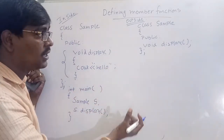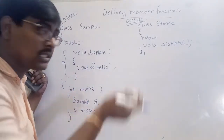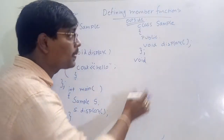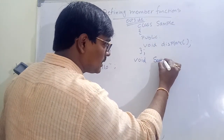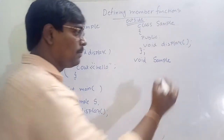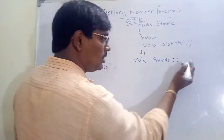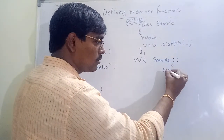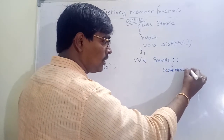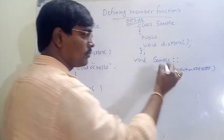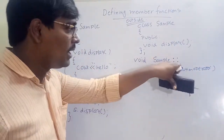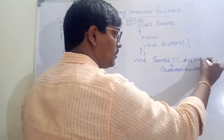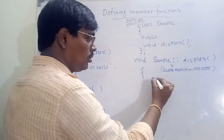Once we come out of the class, we define the function. Remember the syntax: return type, then the name of the class — Sample — then two colons, which are called the scope resolution operator, then the name of the function — display. Then the body: cout << Hello. So the syntax is: return type, class name, scope resolution operator, function name.